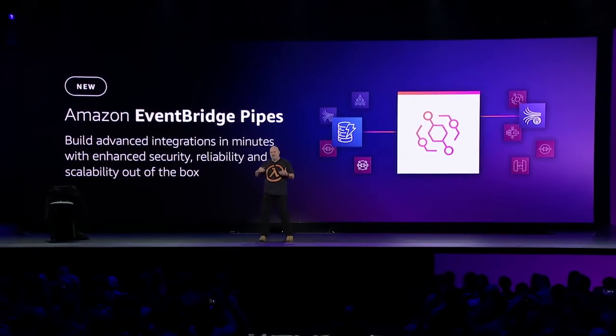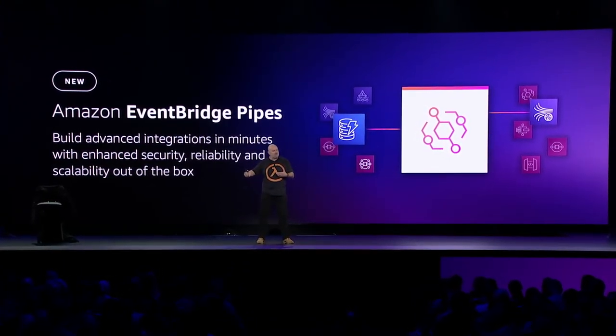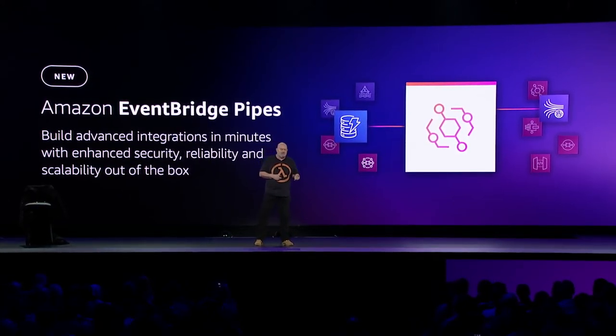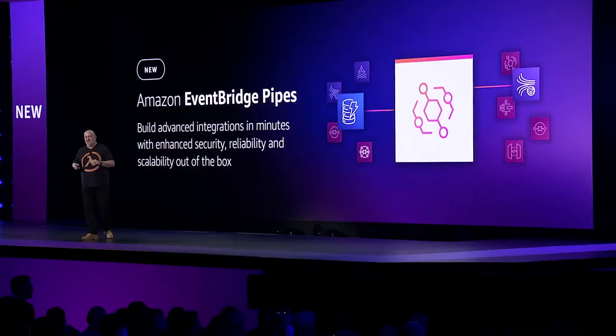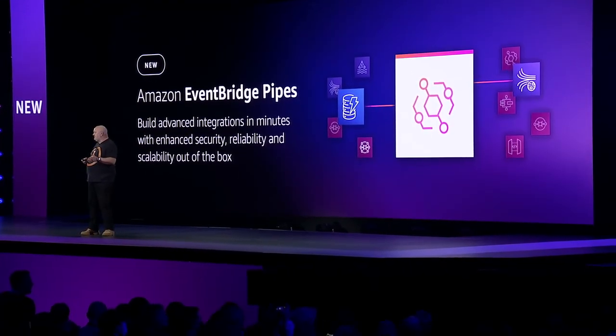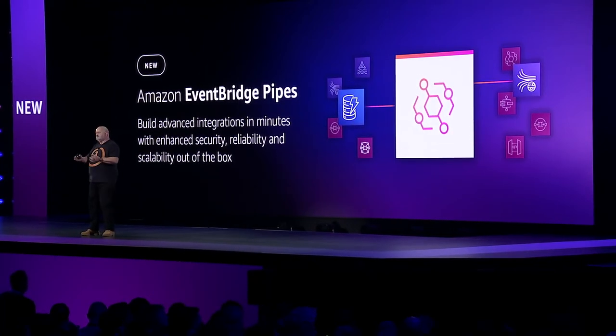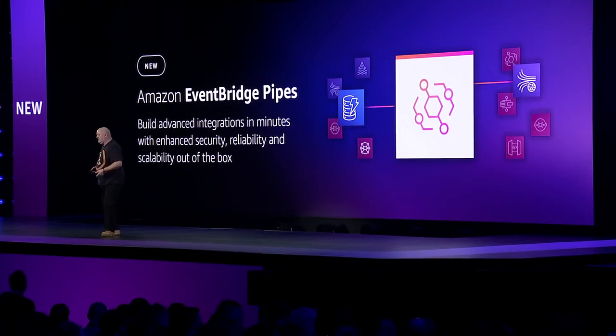If you want to manipulate the events before they reach the consumer, you can write a Lambda function, point to a Step Function, or use API Gateway to run some code to manipulate the events flowing through your pipe. It has built-in filtering, meaning that if you only want a real subset of events to flow to the consumer, you can add that too. Basically, this is pipes on steroids — not just easily composable, but also with the ability to manipulate the events flowing through your pipe.